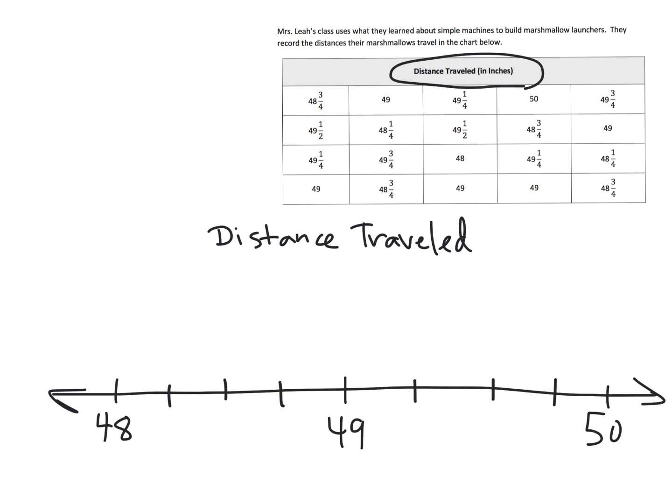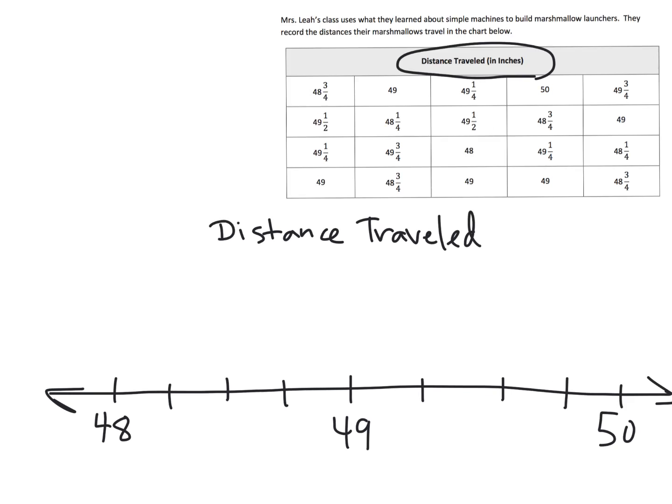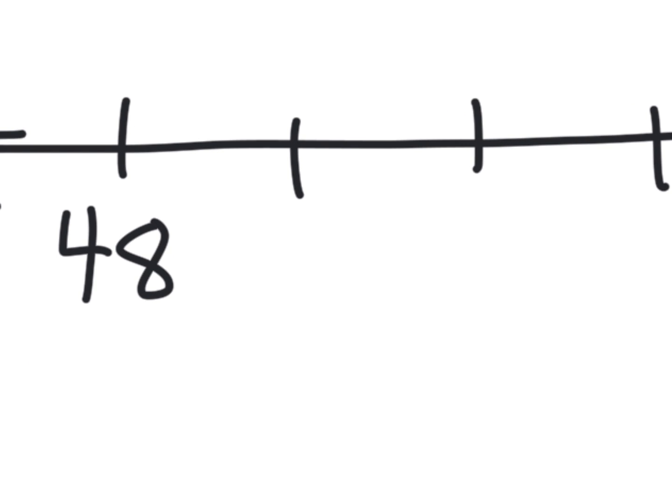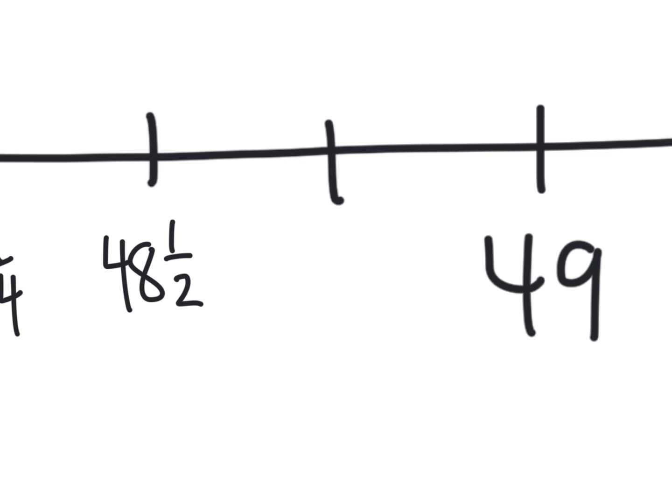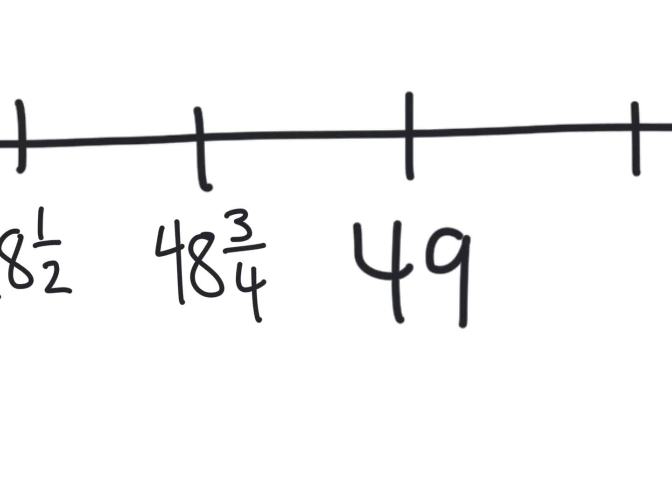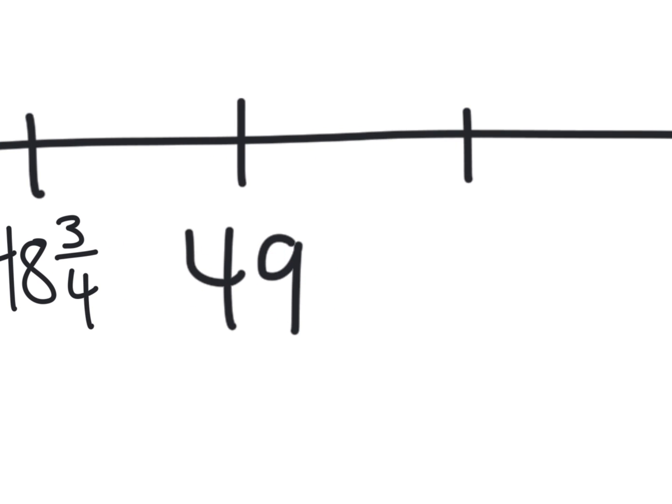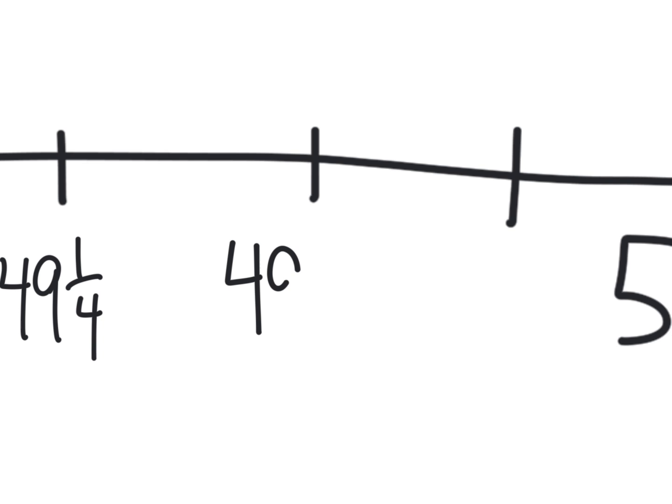And so that is how we are going to get our lines down here. So they're quarters, so it's going to be 48 and one quarter, 48 and a half because two quarters equals a half, and then we've got 48 and three quarters. And now we have 48 and four quarters, which is 49.